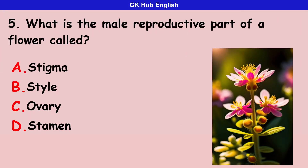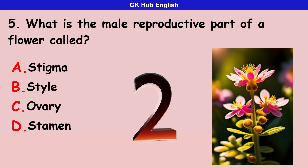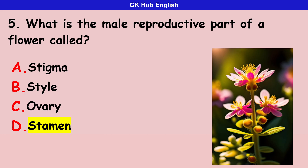Fifth question: what is the male reproductive part of a flower called? Option A is stigma. Option B is style. Option C is ovary. Option D is stamen. Correct answer is stamen.